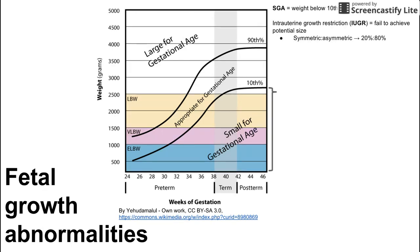Intrauterine growth restriction can be broken down into symmetric or asymmetric growth restriction, with a ratio of about 20 to 80 percent symmetric to asymmetric. When we talk about symmetry here, we're talking about symmetry between the head and the abdomen — not left and right symmetry. A baby whose abdomen is too small for the head would be classified as asymmetric IUGR.